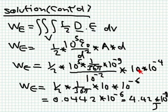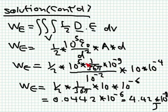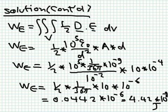Substituting A = 10 cm² = 10⁻⁴ m² and d = 1 cm = 10⁻² m, the d terms partially cancel leaving one factor of d in the denominator. After simplifying — with ε₀ = 1/(36π) × 10⁻⁹ — this evaluates to approximately 4.42 × 10⁻⁸ joules. This is the energy stored in the capacitor. You can verify this result equals ½CV² by computing the capacitance C = ε₀ εr A/d independently.